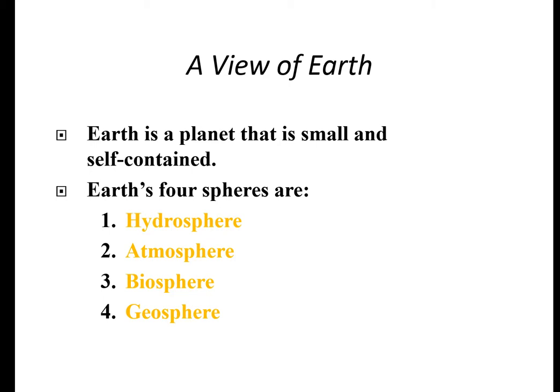Let's take a look at the view of the Earth. The Earth is a planet — a small planet, relatively, compared to bigger planets like Jupiter and Saturn. It's self-contained and has four areas or spheres: the hydrosphere, which is water; the atmosphere, which is air; the biosphere, the living organisms on Earth; and the geosphere, which is the Earth itself — the rock.